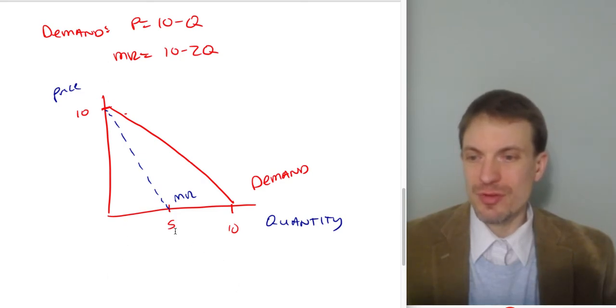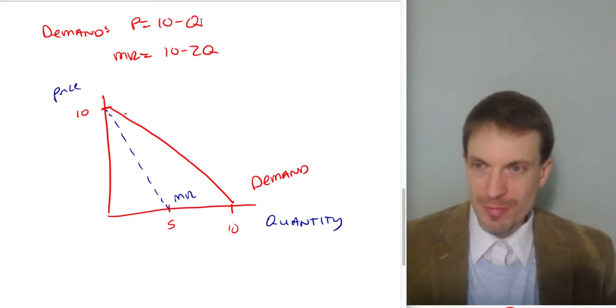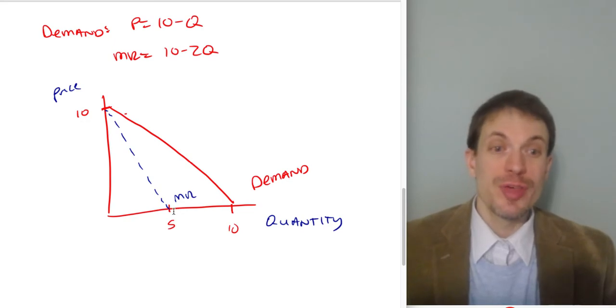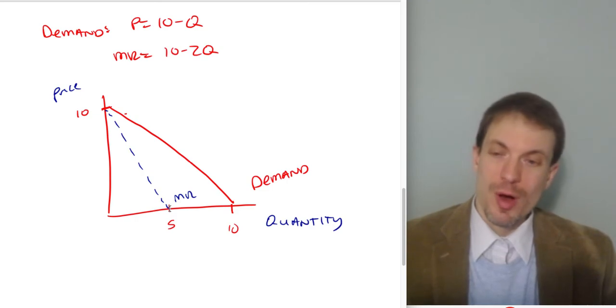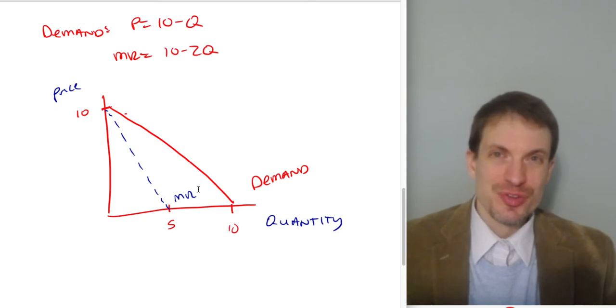showing that the peak of total revenue is going to happen at a price of, sorry, at a quantity of 5 for this demand curve. We know that because total revenue, if we maximize total revenue, we're taking a derivative with respect to quantity. This will be just marginal revenue equal to 0 is the first order condition for a maximum. Sure enough, when marginal revenue is equal to 0, the quantity is 5.